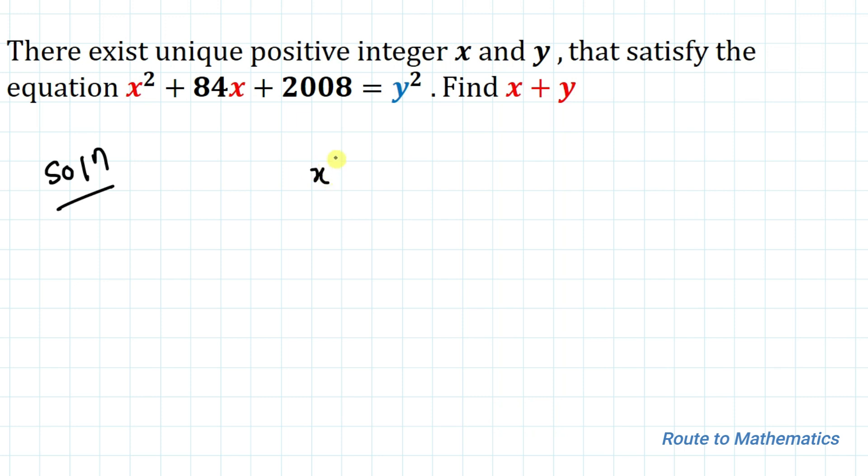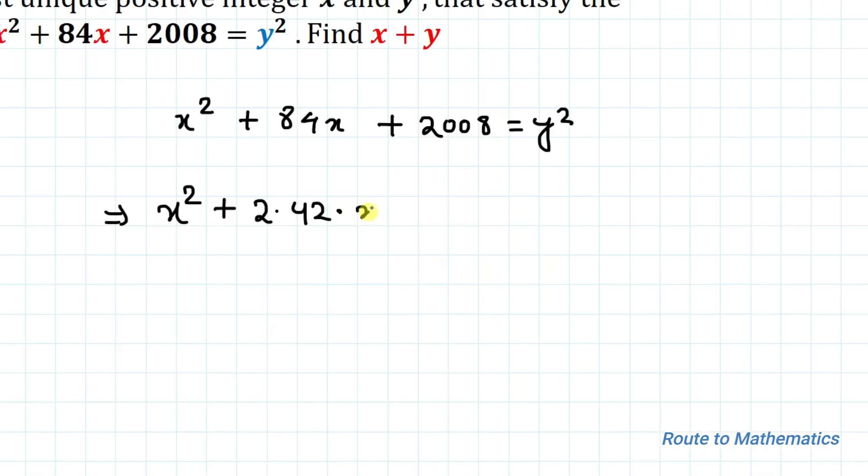We have x squared plus 84x plus 2008 equals y squared. In the next step I can write this equation as x squared plus 2 multiplied with 42 multiplied with x plus 42 squared plus 244 equals y squared, as we know that 42 squared is 1764.